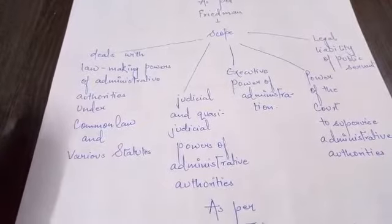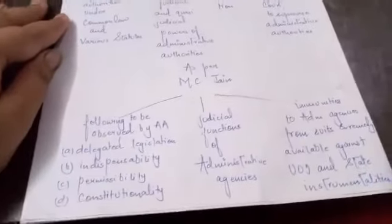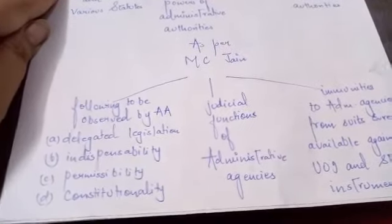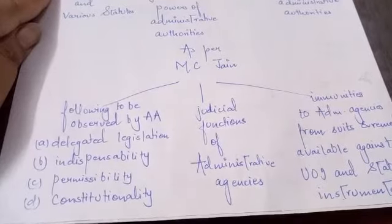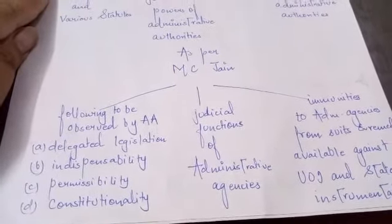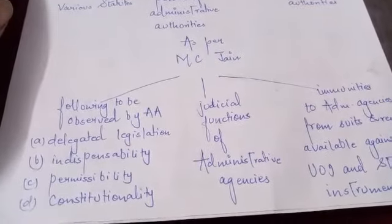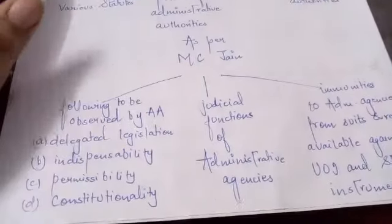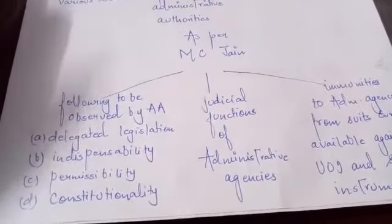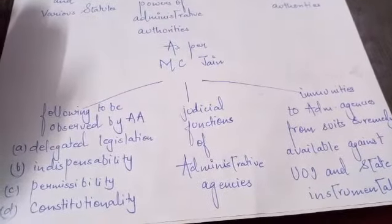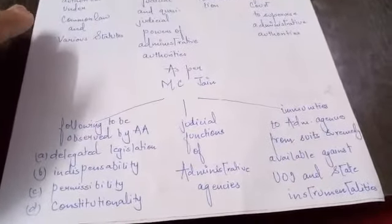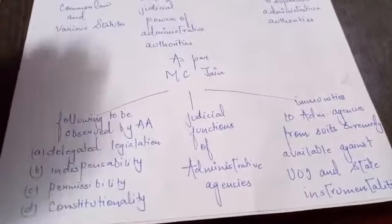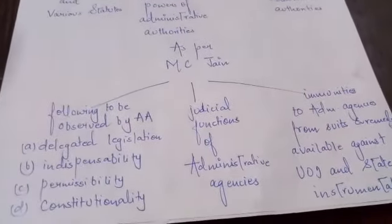As per MC Jain, the scope of administrative law includes: the rules to be followed by administrative authorities; delegated legislation — covering its indispensability, permissibility, and constitutionality; the judicial functions of administrative agencies; and immunities to administrative agencies from suits and remedies available against the Union of India and state instrumentalities.